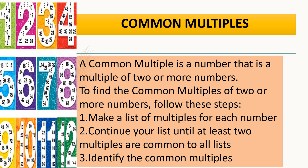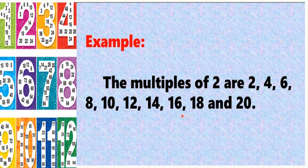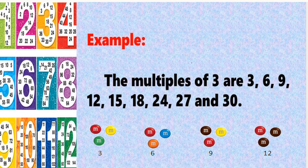Coming to the new topic here children: it is common multiples. To find the common multiples of the given two numbers, first we have to find the multiples of the given numbers. Taking an example — the multiples of 2 are 2, 4, 6, 8 and so on. The multiples of 3 are 3, 6, 9, 12, 15 and so on.